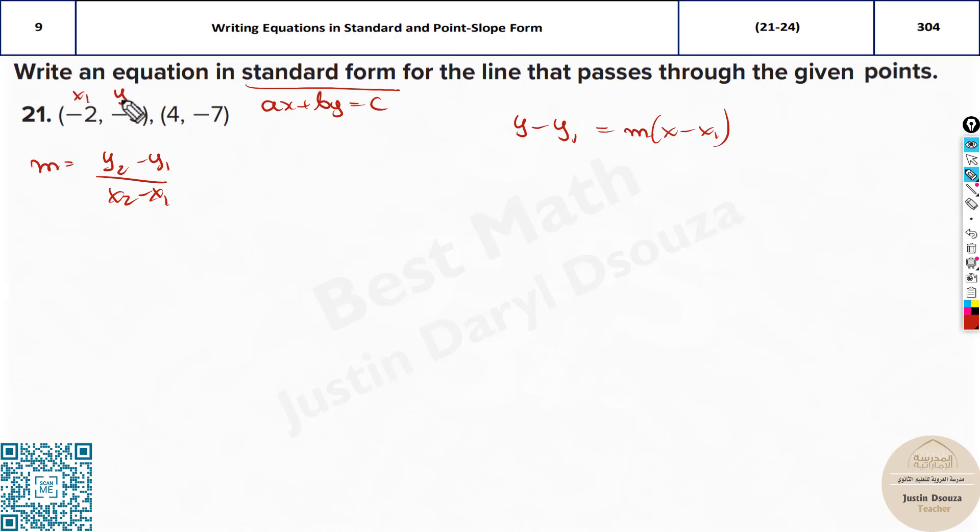Here this is x1, y1, x2, y2. You can substitute 4 and minus 7 here and you'll get the correct answer itself. But since m is unknown, first we solve for m and then choose whichever is easier values.